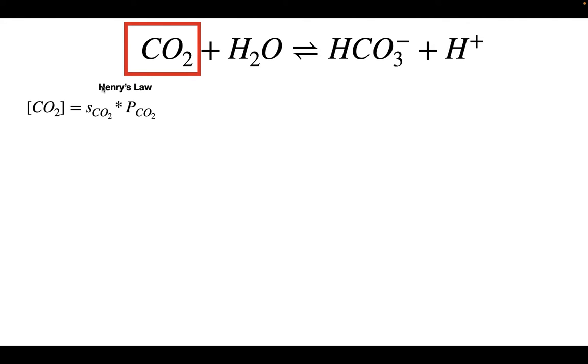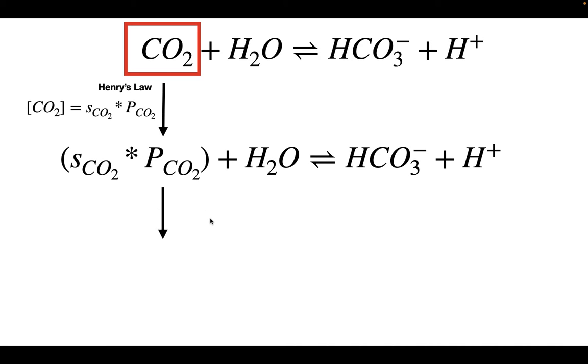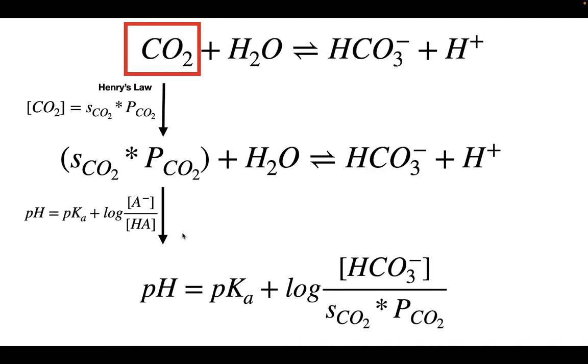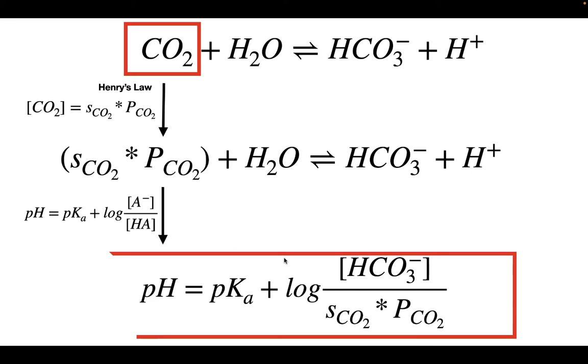Henry's law states that the concentration of CO2 or any gas in a solution is equal to the solubility of that gas in the solvent times the partial pressure of CO2 above it. We can substitute this into the equation and then write our Henderson-Hasselbalch equation: pH = pKa + log [HCO3⁻] / (sCO2 * PCO2). This equation can be used to calculate the pH of the bicarbonate buffer system.